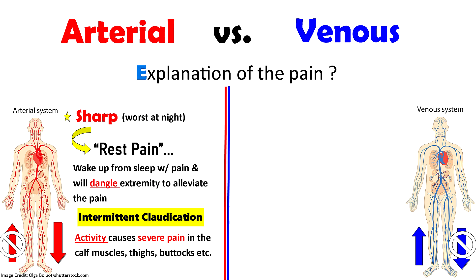E is for explanation of the pain — have your patient explain the characteristics they're experiencing. With arterial, the pain is going to be sharp and it tends to be worse at night. They have something called rest pain, where whenever they're sleeping their legs will be horizontal on the bed, affecting blood flow, so they'll actually wake up from sleep with leg pain and dangle their leg off the bed to alleviate it. They will also have a hallmark sign called intermittent claudication, where any activity like running or walking causes severe cramping, tingling pain in their legs, thighs, or buttocks — relieved once they quit that activity.